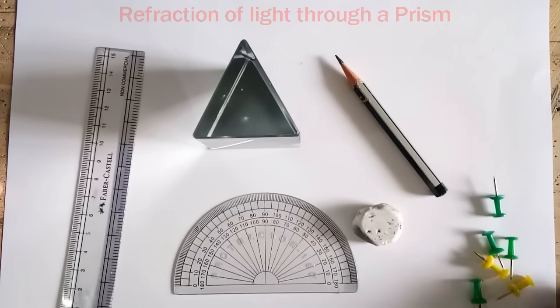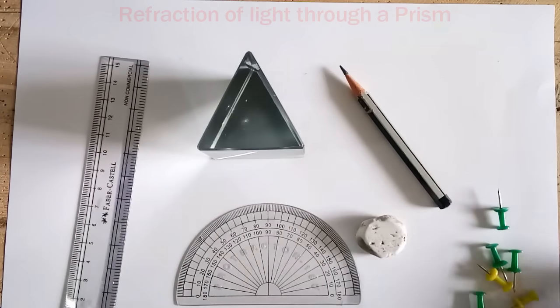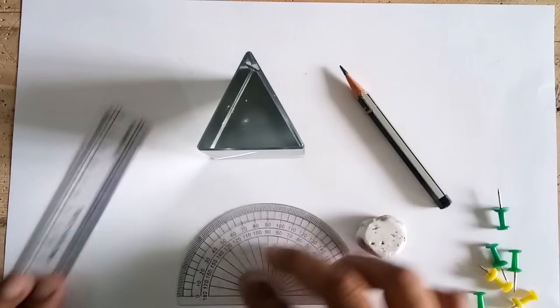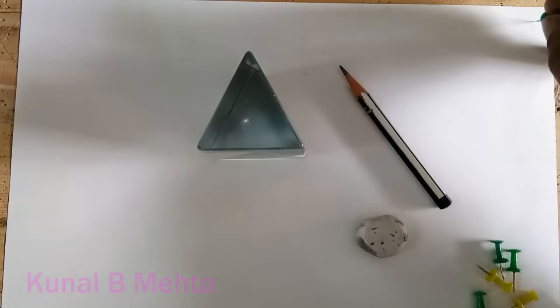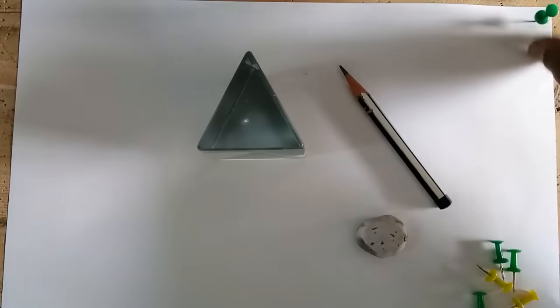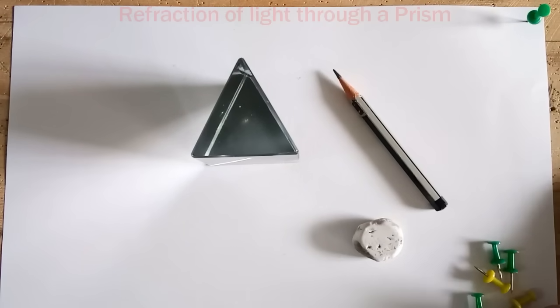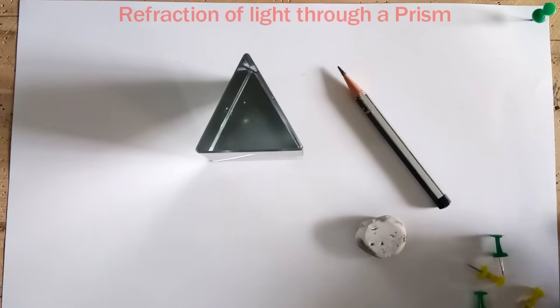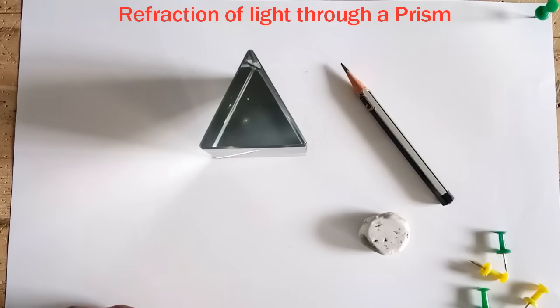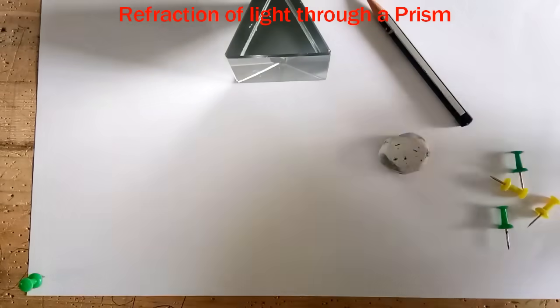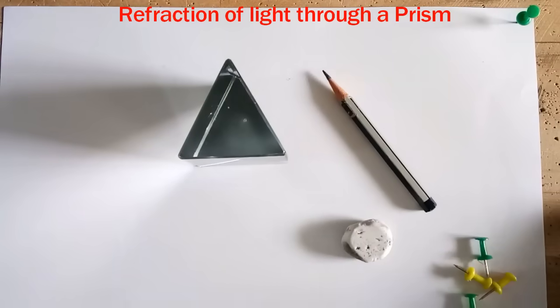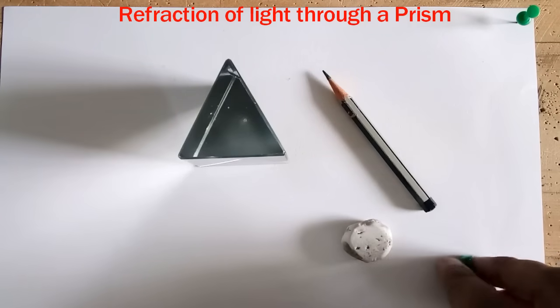Let us begin with the experiment and this experiment will be almost the same as the refraction through glass slab experiment. First of all take two softboard pins and fix it on the wooden pad. This is A4 size paper on the wooden pad and now I am fixing both the softboard pins on two edges so that my paper does not move.